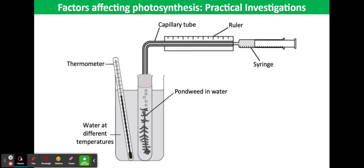However, there are limitations with this method, because some of the oxygen produced by the plant will be used for its respiration, and there may be some dissolved nitrogen in the gas collected. However, the same apparatus can be adapted and used to measure the effects of light intensity, temperature, or carbon dioxide availability on the rate of photosynthesis.